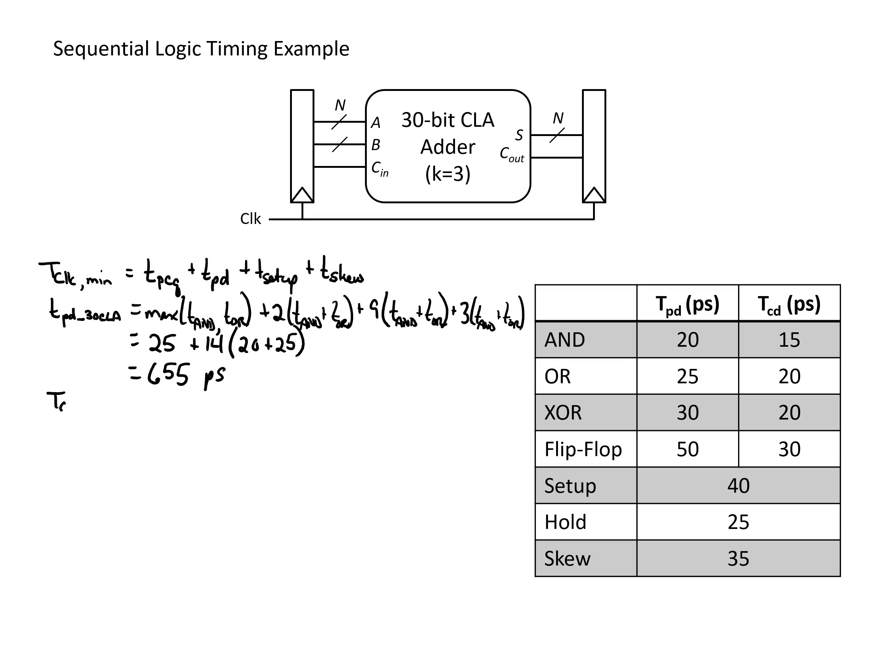To determine the overall minimum clock period, we would take the propagation delay of our flip-flop which is given as 50, the combinational logic delay of 655, the setup time of 40, and then finally the skew we have of 35 picoseconds. We find that this equals 780 picoseconds.